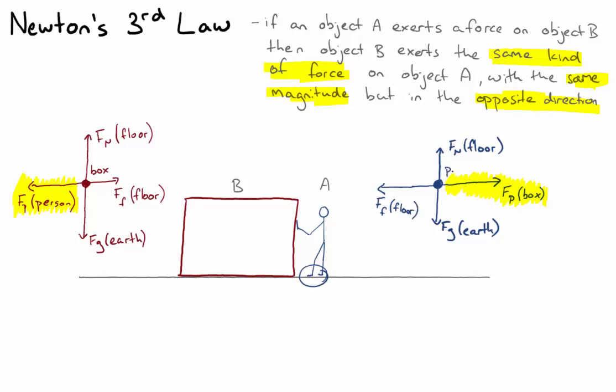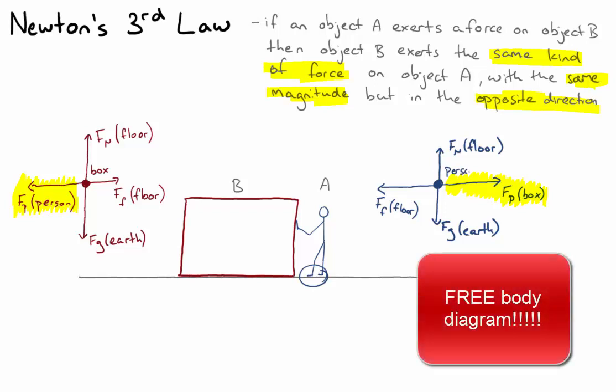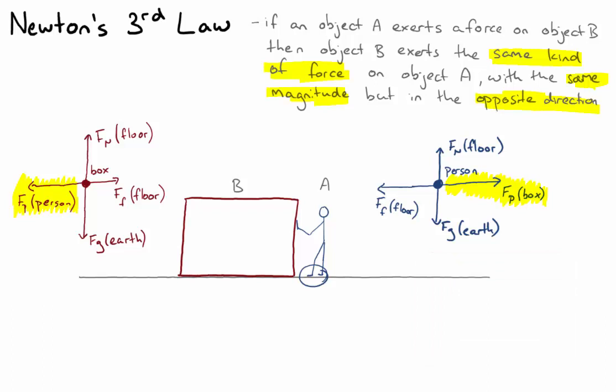So there's our force body diagram for the person. And here the key point is that there are a pair of forces, the push force of the person on the box, and the opposite direction, push force of the box on the person.